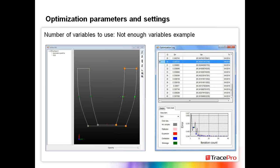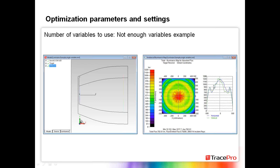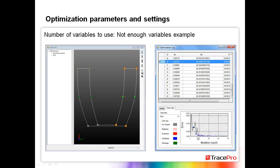One question that comes up fairly often is how many variables to use during the optimization process. There's no exact answer — it comes with experience. Here's an example of a reflector with only a single variable defined: the control point can only move left or right. In this case there's really not enough variables defined to do the job. The resulting reflector from this shows a relatively uniform illumination in the central portion, and the optimization process finished quickly after about ten iterations.